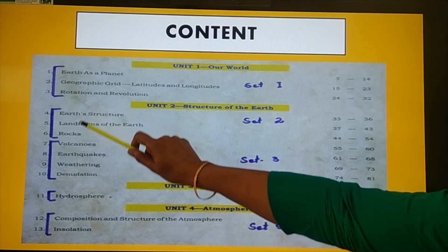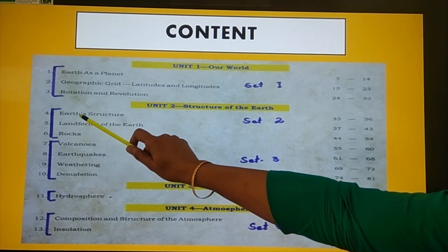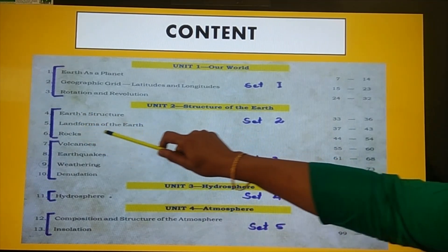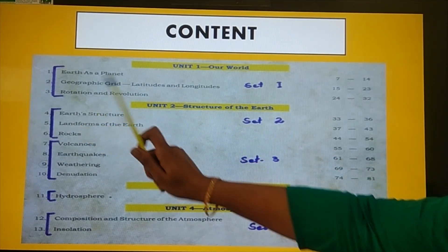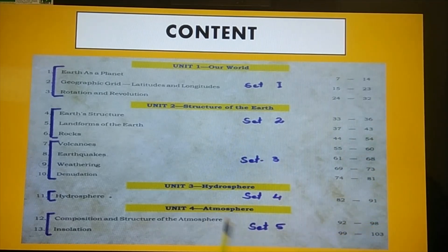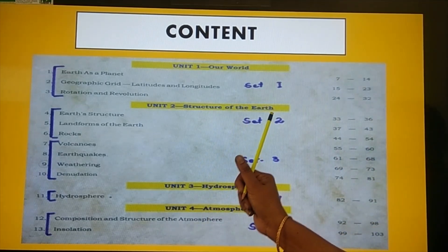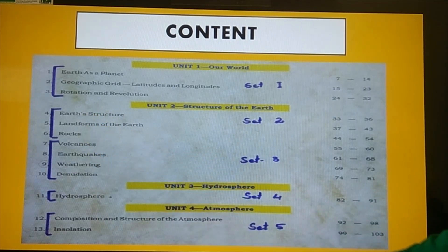Second set there are 3 chapters: Earth structure, Landform of the earth, and Rock. This will be considered one because it's the same thing - the structure of the earth. One question will come out of these 3.